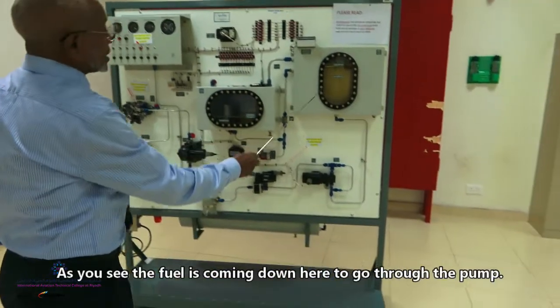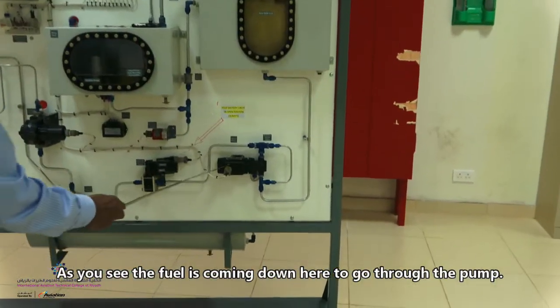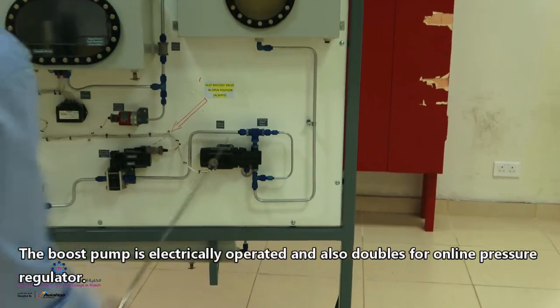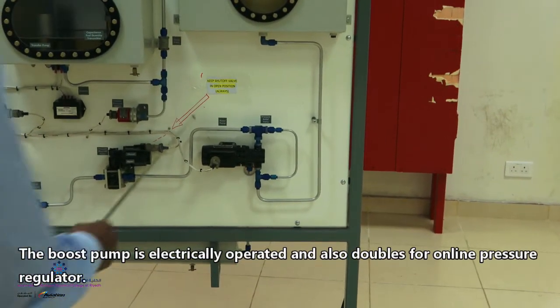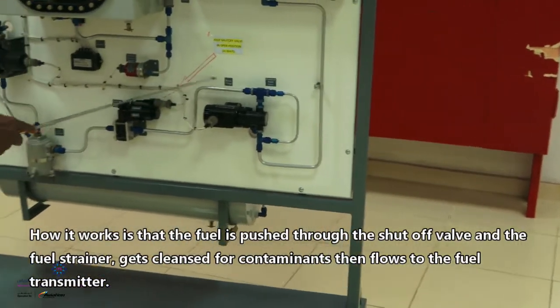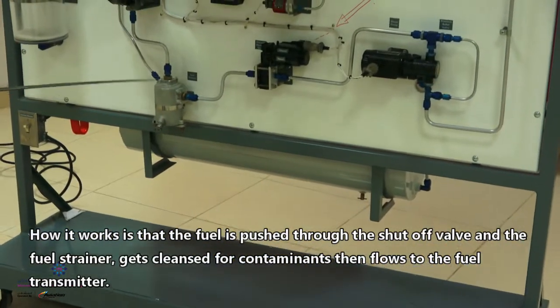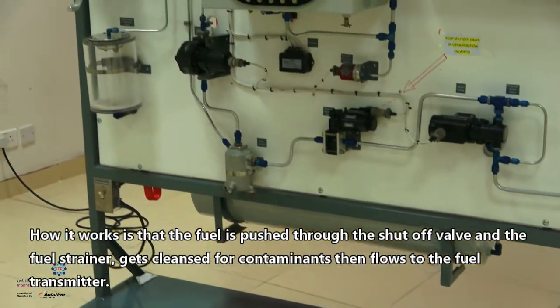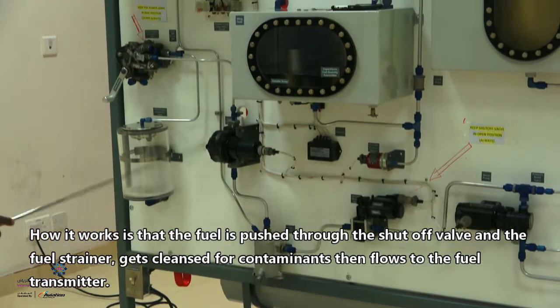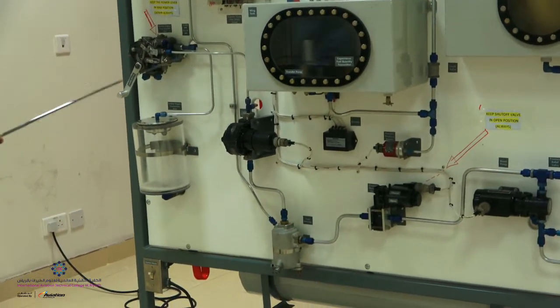As you see now, the fuel is coming down here. It goes through the pump. This boost pump is an electric-operated motor and also it is a low pressure regulator. What it's doing, the fuel coming down here, it goes through the shutoff valve, and then it goes to the fuel strainer, clean it up, and then it goes to the fuel transmitter. The fuel transmitter will do for you the reading.